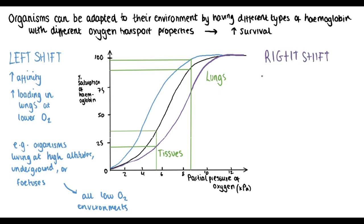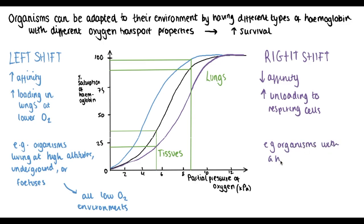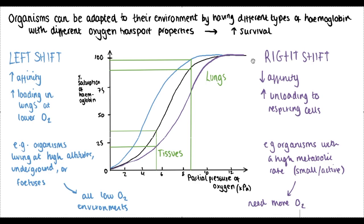In organisms whose curve has shifted to the right, haemoglobin has a lower affinity for oxygen. This time, the benefit is in the tissues rather than the lungs. At the same partial pressure of oxygen in the tissue, haemoglobin has a lower saturation, meaning more oxygen has been unloaded to the tissues — similar to the Bohr effect. This is important in organisms that need more oxygen in their tissues, for example those with a high metabolic rate, such as small or active animals. These are the two main ways organisms can be adapted to their environment through different types of haemoglobin, enabling them to survive better.